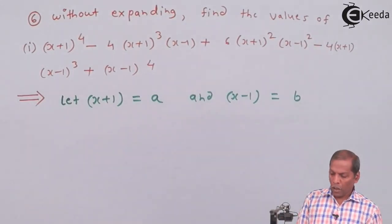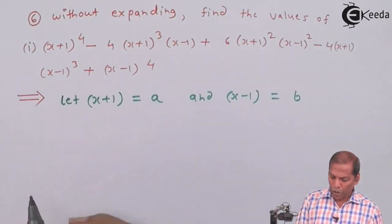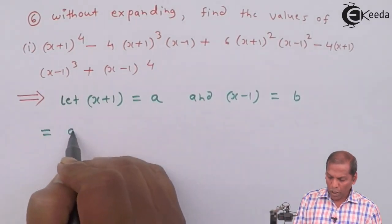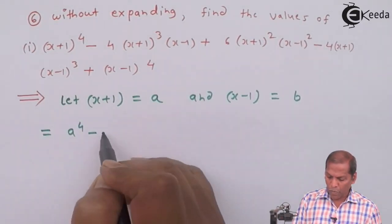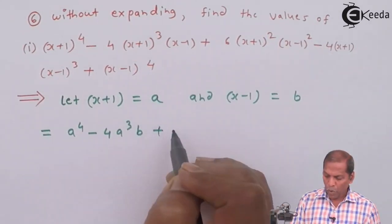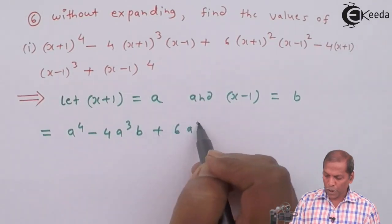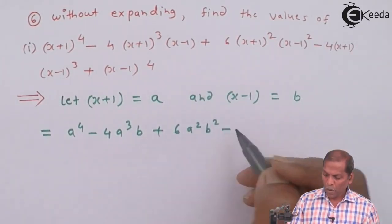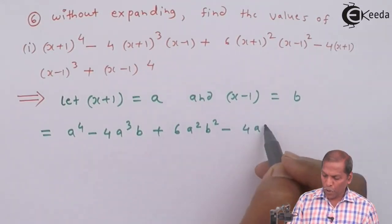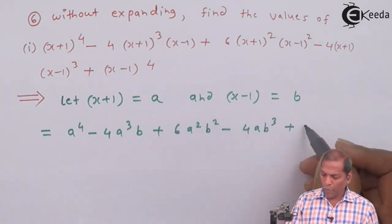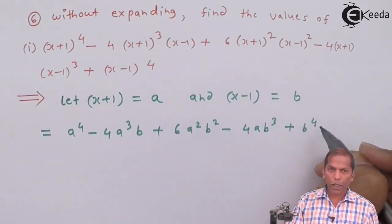Then the above problem becomes a^4 - 4a^3b + 6a^2b^2 - 4ab^3 + b^4.